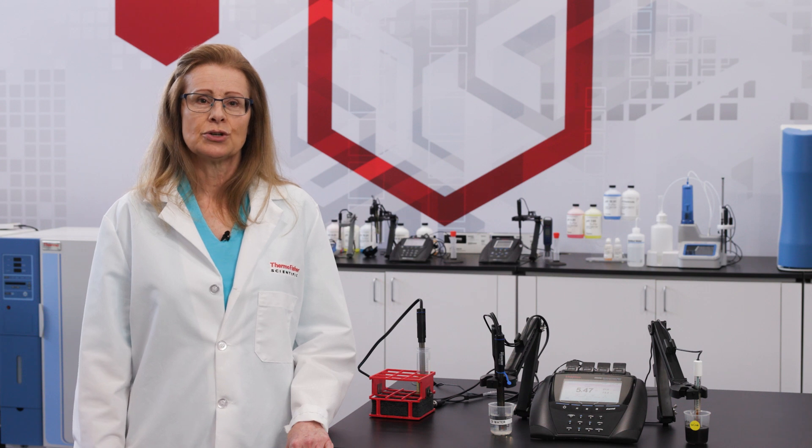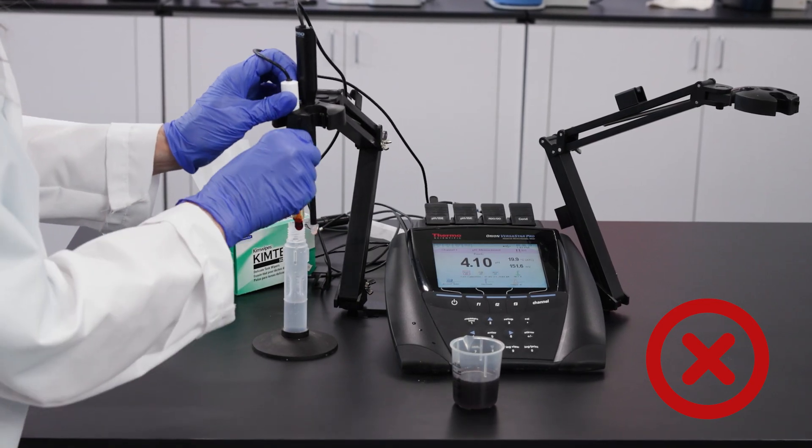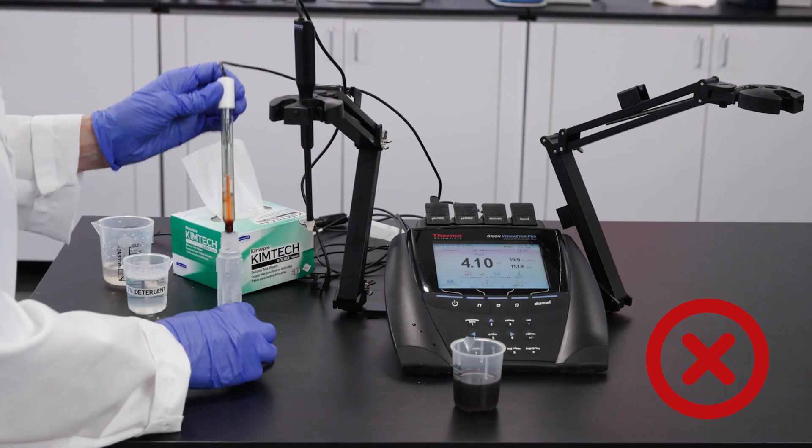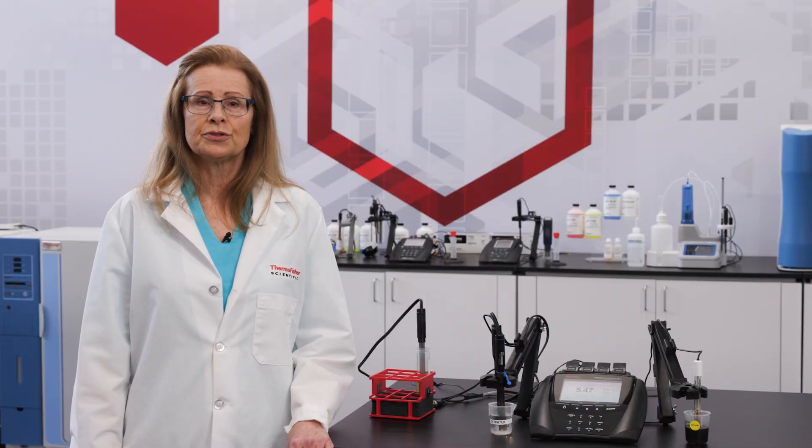When we don't periodically clean our electrode, the junction can clog and the bulb can get dirty and coated. Leaving the electrode in the last dirty sample or neglecting to rinse or wipe the sample off before storage are practices that will lead to trouble. Under these conditions, the electrode junction can clog and the bulb becomes dirty and coated. As a result, pH readings can drift and become slow or erratic. The calibration does not hold and the slope can go out of the acceptance range.